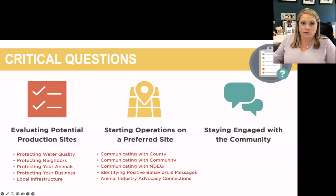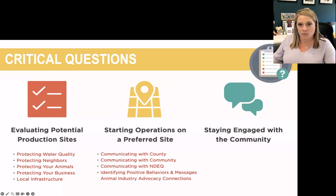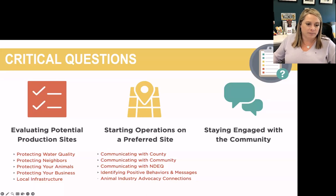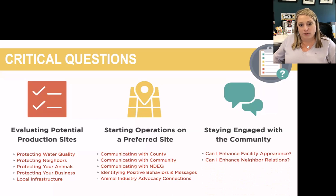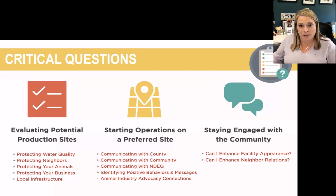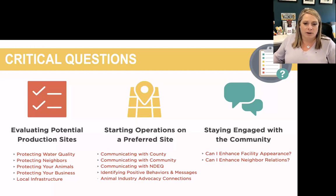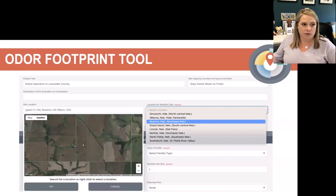The second subject area is about starting an operation. Once you've evaluated where you want to build, this section covers how to start communicating with the different individuals or organizations that might have a say — your county, neighbors, community, regulatory agencies, and so on. The third is staying engaged with the community. There's a lot of value in being a positive community member, so we discuss the appearance of your facility, things you can do to enhance it, and ways to improve neighbor relations.